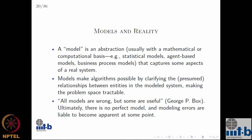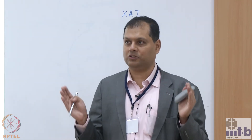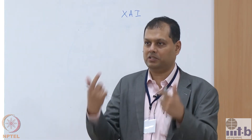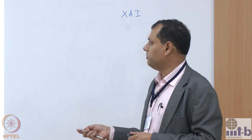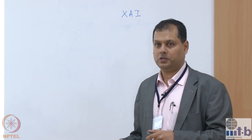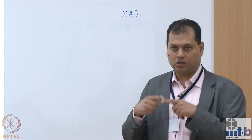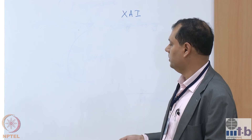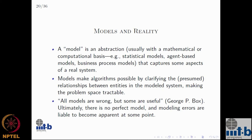The model is an abstraction with some mathematical or computational basis — like agent-based models and statistical models — where you try to capture some aspect of a real system. That's because the real system is horrendously complex. You can't capture the entirety of a real system; you have a model that captures some essential aspects. You then run algorithms inside those models, and those algorithms describe how the system would behave. There is a very well-known quote by George P. Box, a well-known American statistician.